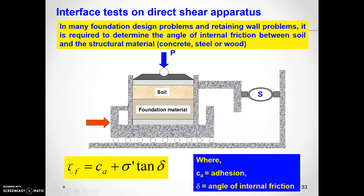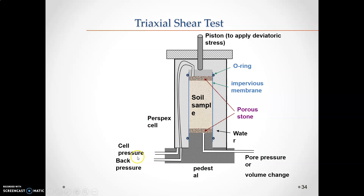Finally, the shear strength can be calculated using the formula: tau equals c plus sigma times tan(phi). In terms of effective stress, tau-f equals c-prime plus sigma-dash times tan(delta), where delta is the angle of internal friction and sigma-dash equals sigma minus u — pore water pressure must be subtracted.